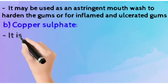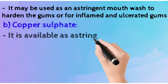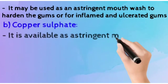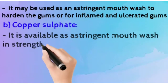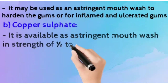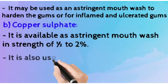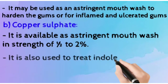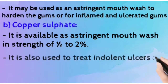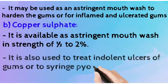Then, copper sulfate. This is available as an astringent mouthwash in a strength of 0.5% to 2%. It is also used to treat any indolent ulcers and ulcers in the gums, or to syringe periodontal pockets.